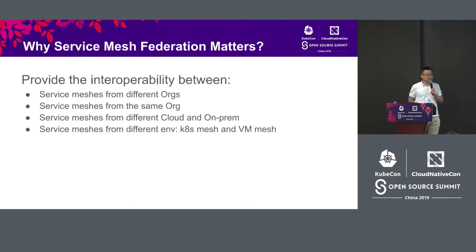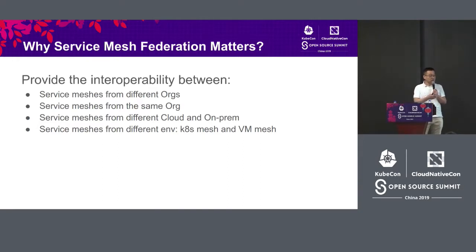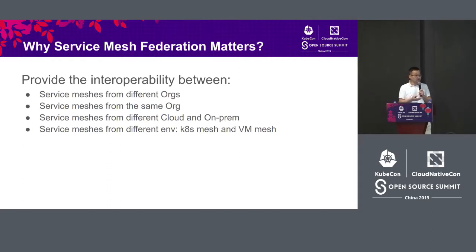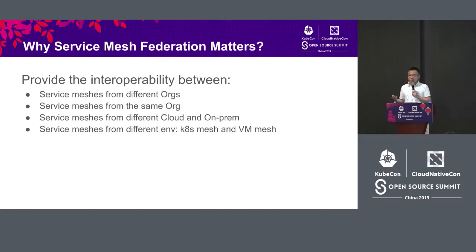Now let's talk about Service Mesh Federation. Why do we need it? Imagine you have workloads running from different meshes — how can these workloads talk to each other? The main point of Service Mesh Federation is to provide interoperability between two different meshes. The meshes may come from different organizations, different departments in the same organization, one mesh on-prem and another on public cloud, or one mesh for Kubernetes workloads and another for VM workloads. Service Mesh Federation allows you to make these workloads talk to each other.